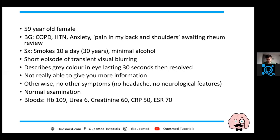Just briefly, she's 59 years old with COPD, hypertension, and some pain. She's a smoker. The reason she comes in is she has a short episode of visual blurring, described as a gray color, lasting about 30 seconds, with no other symptoms.